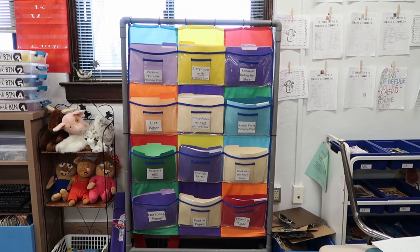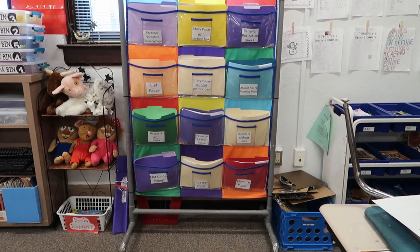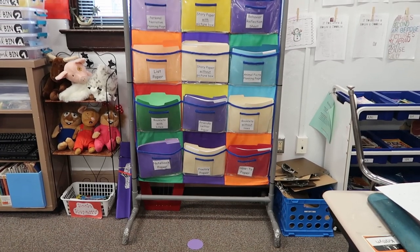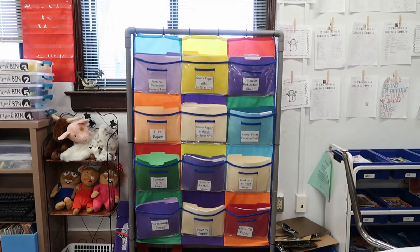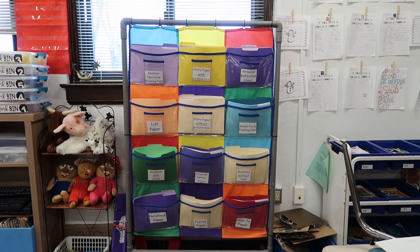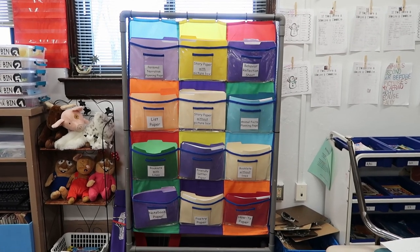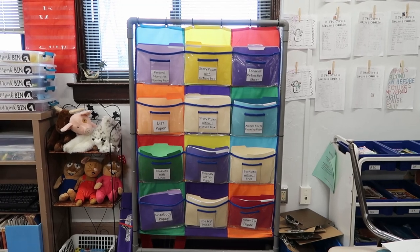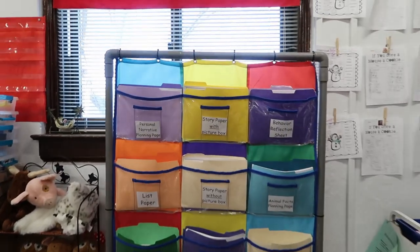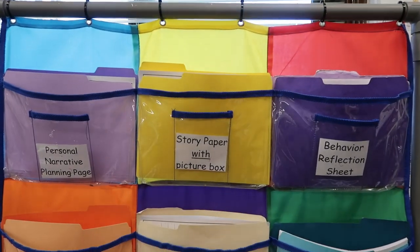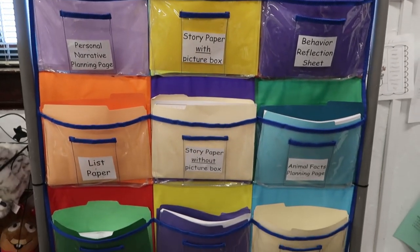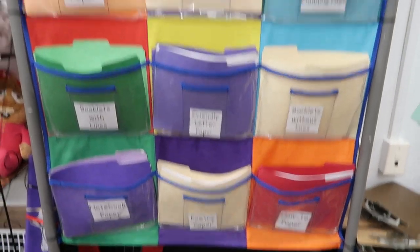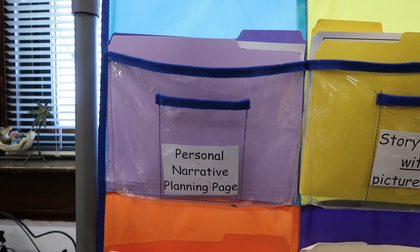This is my writing paper organizer. I had a friend make this for me from PVC pipe, painted it gray, and the hanging pocket chart is from Really Good Stuff. There are 12 pockets and I have different kinds of writing paper in each pocket. I'm going to go through and show you what kinds of paper are in each one of these pockets.